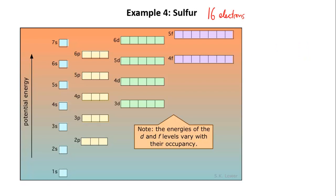Last example, sulfur. Sulfur is the 16th element so we have 16 electrons to distribute. So we fill the 1s and the 2s, all the 2p orbitals, the 3s and so far that means we've used up 12 of the 16 electrons.